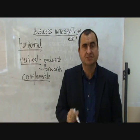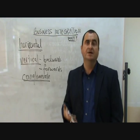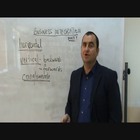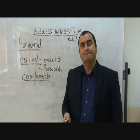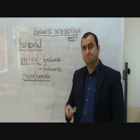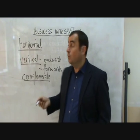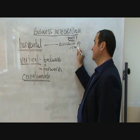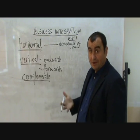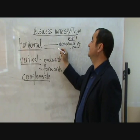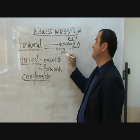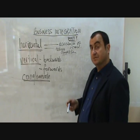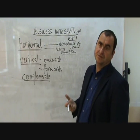Horizontal integration is when a business joins with another business — merges or takes over another business — that is in the same industry and at the same stage of production. For example, a supermarket chain buying another supermarket chain, or a car manufacturer like Volkswagen buying another car manufacturer like Skoda, which they did some years ago. Why do it? The benefits are to achieve economies of scale, since they are now bigger and can buy raw materials and component parts more cheaply in bulk. It also reduces competition and increases the concentration of the industry.